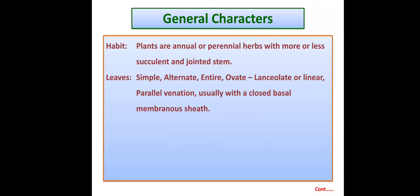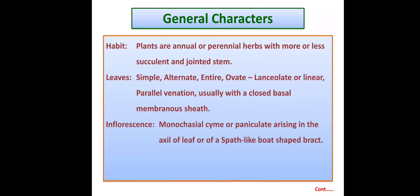Inflorescence: this family has a very special character in its inflorescence — it has a monochasial cyme, or sometimes it is paniculate. The arrangement of flowers in the inflorescence occurs within a leaf-like, spathe-like, boat-shaped bract. When we study the external morphology we will see pictures of that bract to understand what exactly the spathe-like boat-shaped bract looks like. This is a particular character of this family.